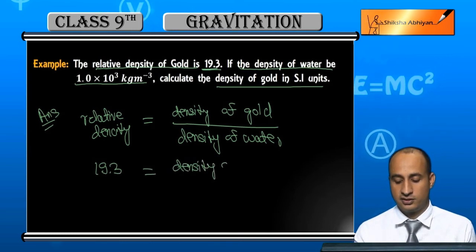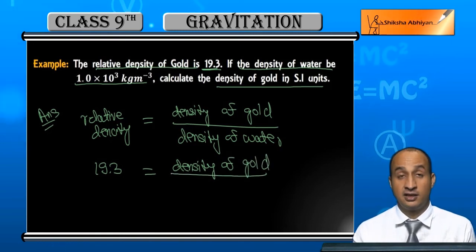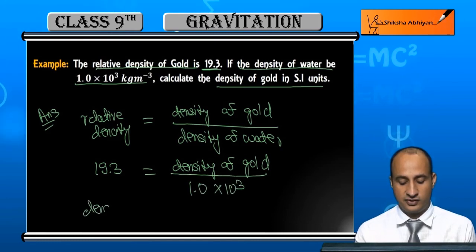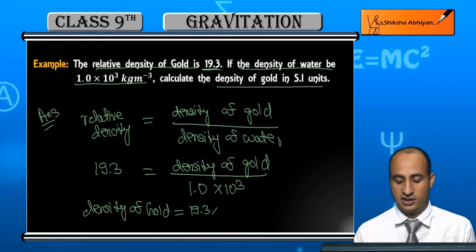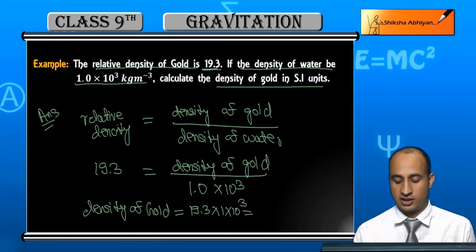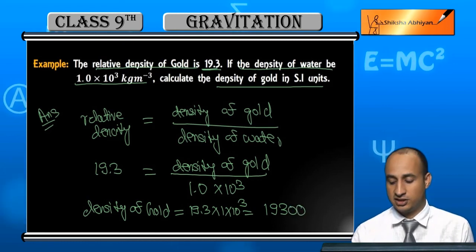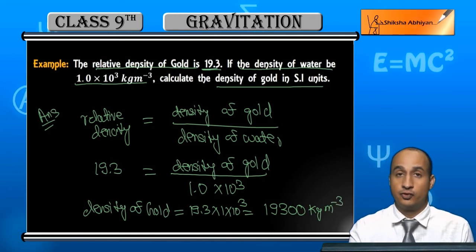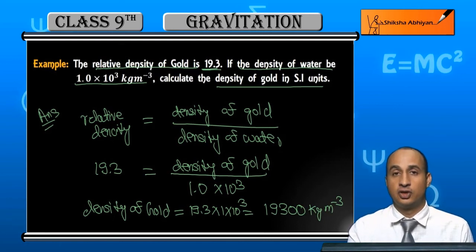Relative density hai 19.3 aur density of water hai 1.0 × 10³ kg per meter cube. Cross multiply karte hain: density of gold = 19.3 × 1.0 × 10³ = 19.3 × 10³ kg per meter cube.